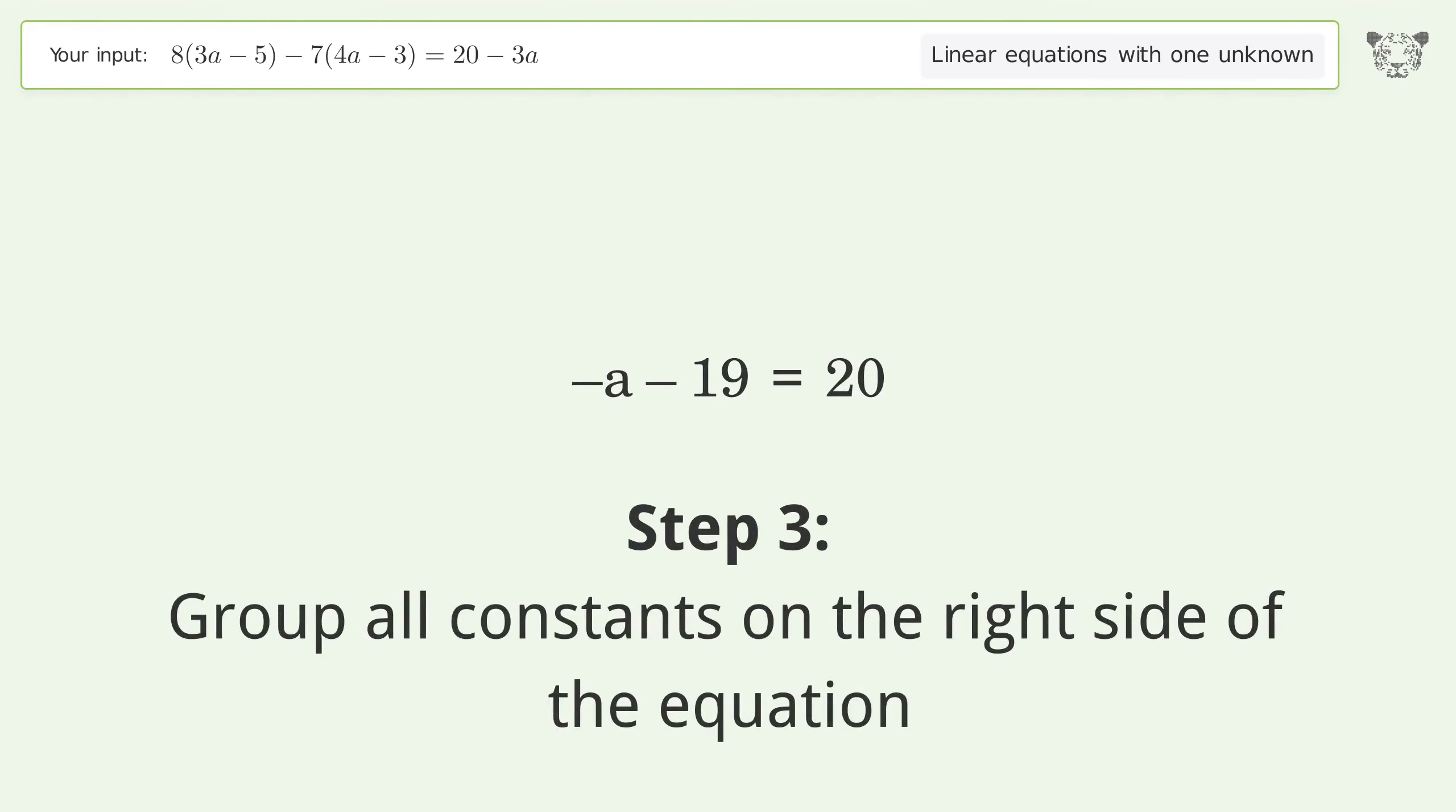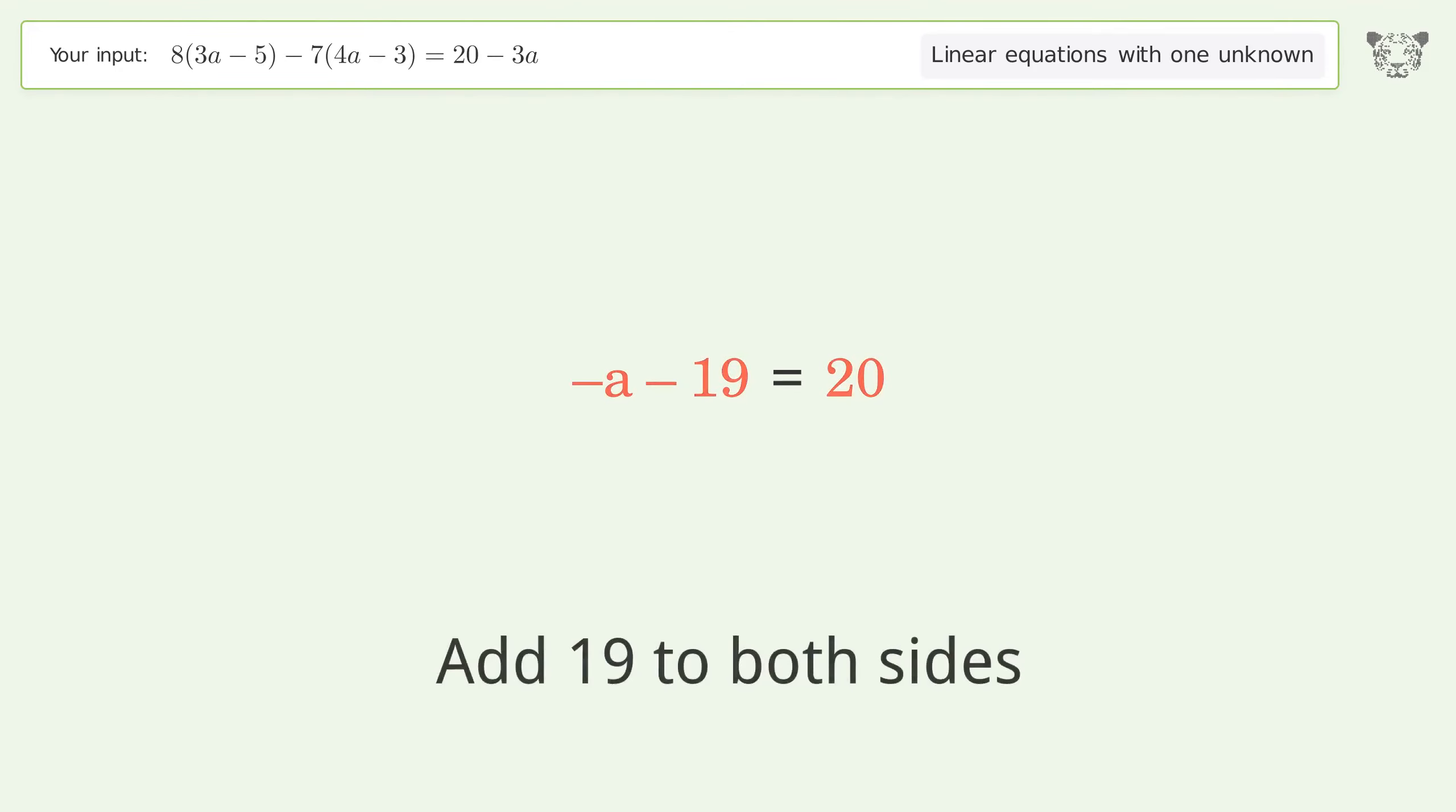Group like terms on the right side of the equation. Add 19 to both sides. Simplify the arithmetic.